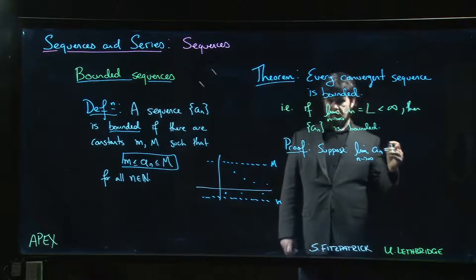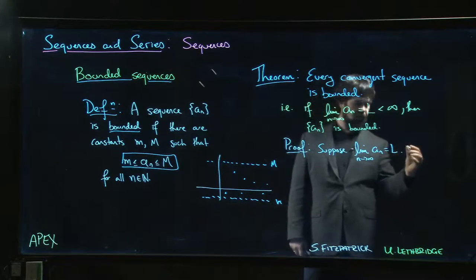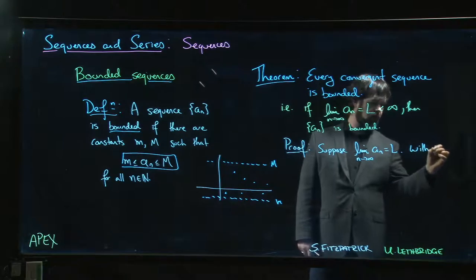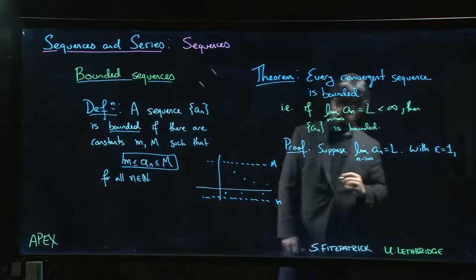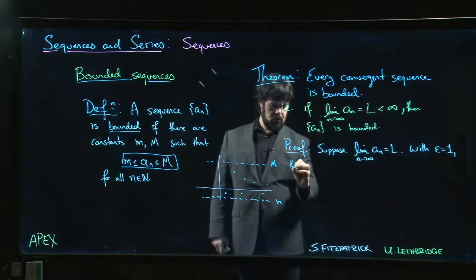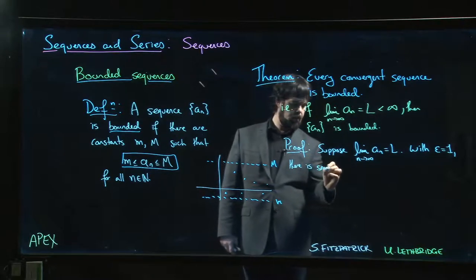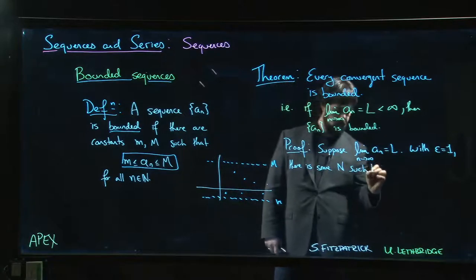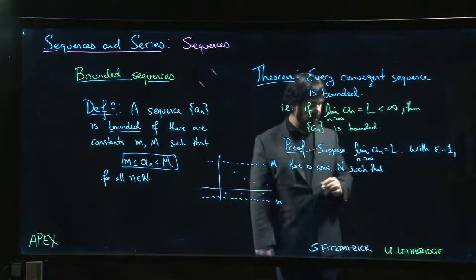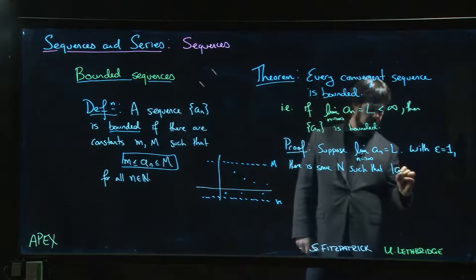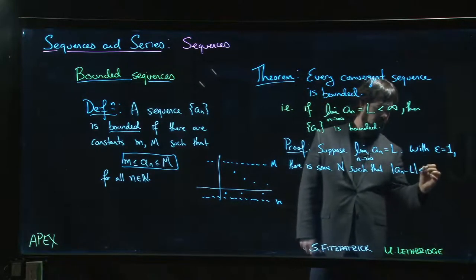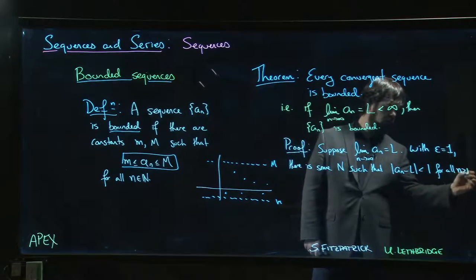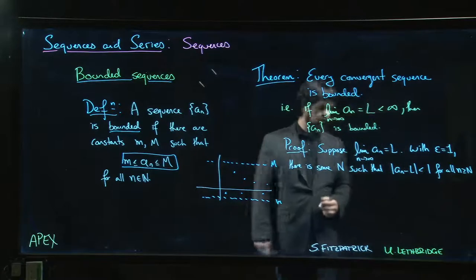I can choose any epsilon because I know this limit exists. So if I take epsilon equal to 1, there has to be some capital N such that the absolute value of a_n minus L is less than 1 for all n bigger than or equal to N.